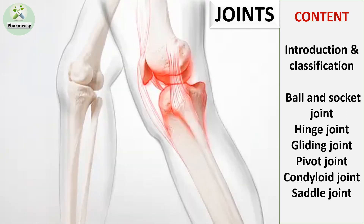Hello everyone, welcome to our YouTube channel Farmeasy Baiswati. Today, we will cover the very interesting topic: joints of the human body. The lecture will include introduction and classification of joints — ball and socket joint, hinge joint, gliding joint, pivot joint, condyloid joint, and saddle joint. So without wasting your time, let's start.